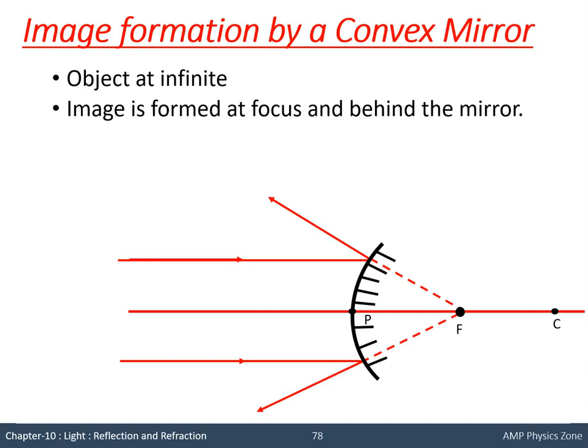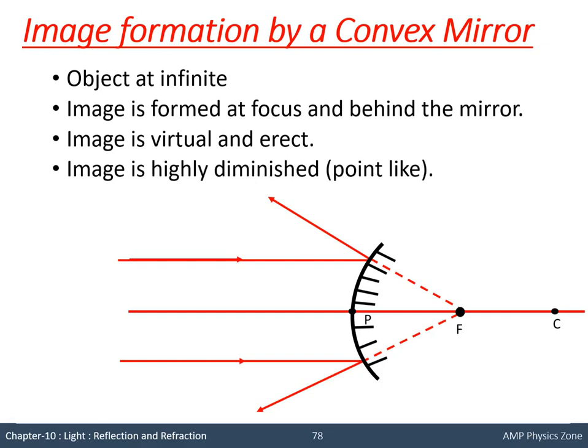The image will be highly diminished — point-like — so it will be very small in size compared to the object. It will be virtual and erect. So: object at infinity → image formed at focus, behind the mirror, virtual and erect, and highly diminished. Whenever the object is at infinity, rays from the object are parallel to each other and parallel to the principal axis.